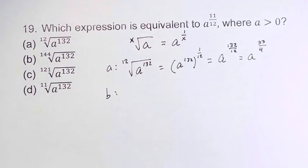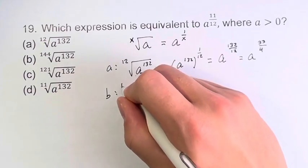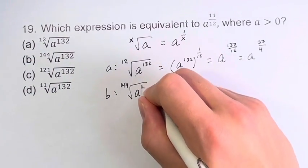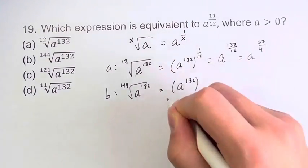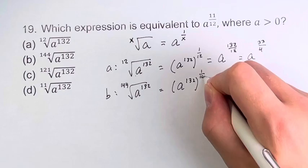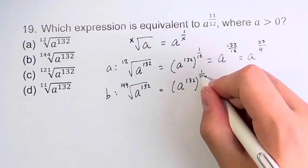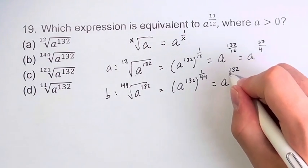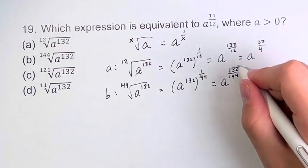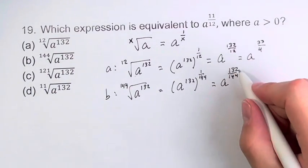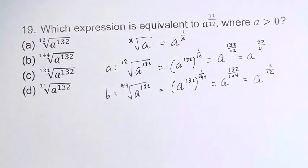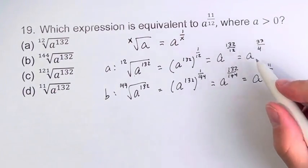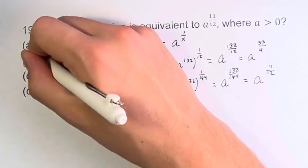For option b, we have a to the 132 taken to the 144th root. We take the thing inside and take it to the 1 over 144. Again, we multiply these to get 132 over 144. These are both divisible by 12. So 132 divided by 12 is 11, and 144 divided by 12 is 12, simplifying the fraction. Therefore, b is equal to a to the 11 over 12, which is what we're looking for. So our final answer is b.